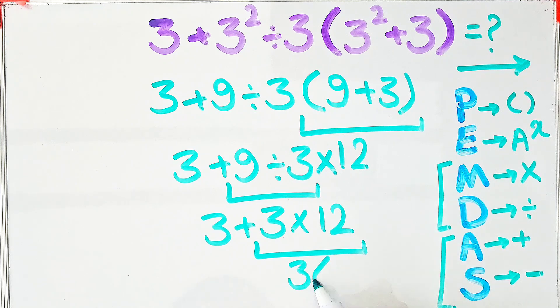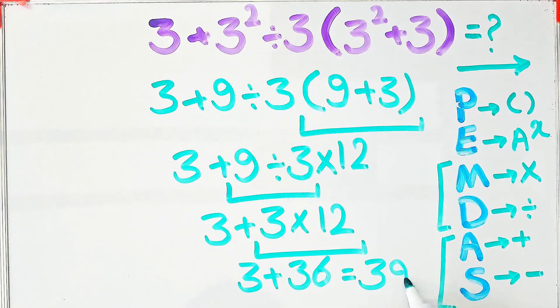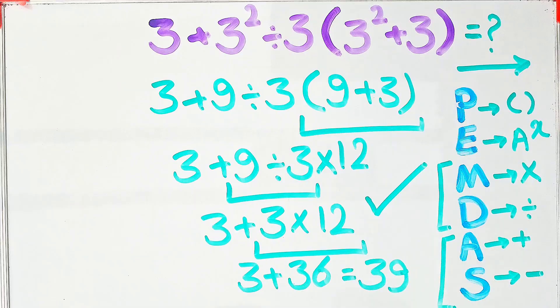And 3 plus 36 equals 39. The final answer of this question equals 39. Thanks for watching guys. To see more math videos, subscribe to the channel. Goodbye.